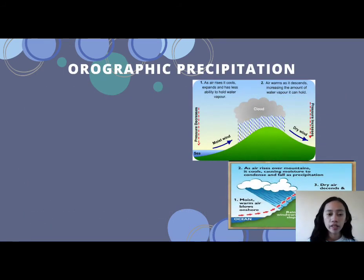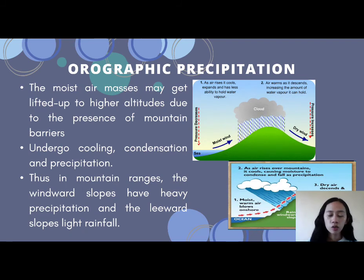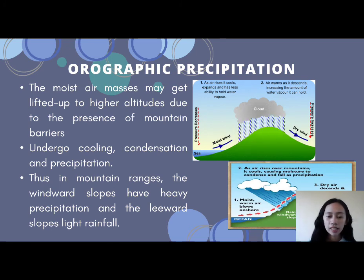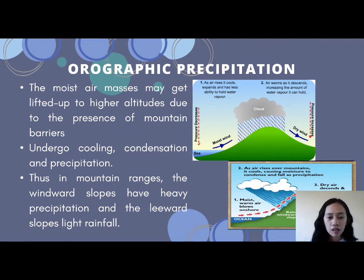The last weather system is orographic precipitation. In orographic precipitation, moist air masses get lifted up to higher altitudes due to the presence of mountain barriers. When moist air near the sea is forced upward by a mountain, it undergoes cooling and cannot pass to the other side. After cooling, the process of condensation takes place and produces precipitation. The side of the mountain facing the wind is called the windward side, and the opposite side is called the leeward side. The windward side receives heavy rainfall, while the leeward side receives light rain.